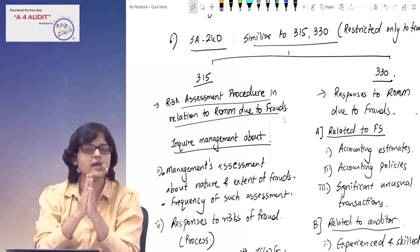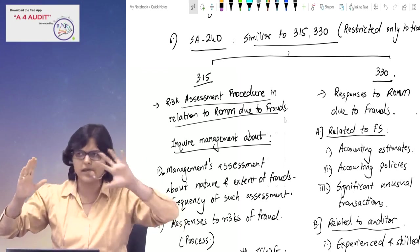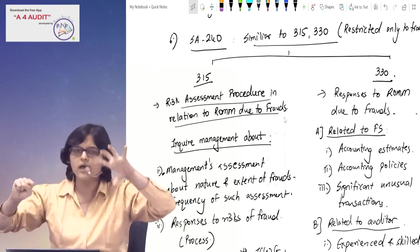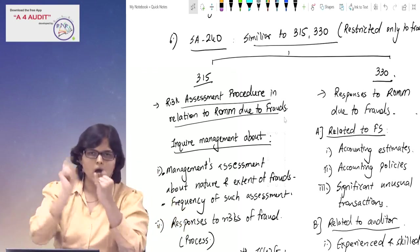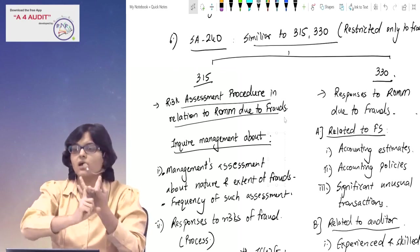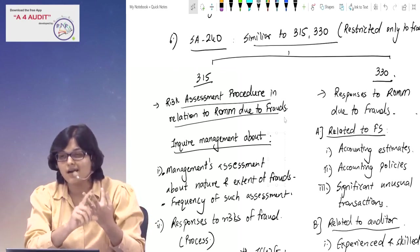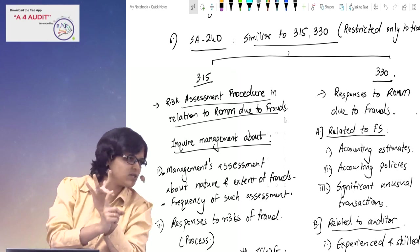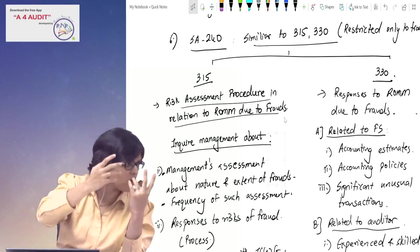Next point: fraud is made, how do we respond? Two ways to remember - one is FS related and one is auditor related. What was FS related? Accounting estimates, accounting policies, and unusual transactions outside the normal course of business.